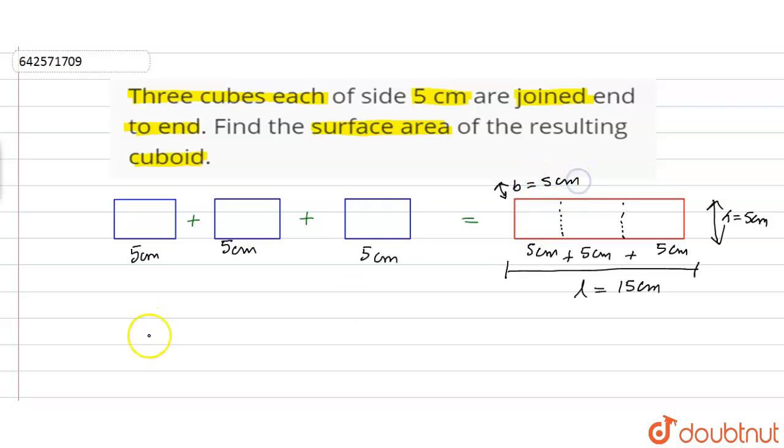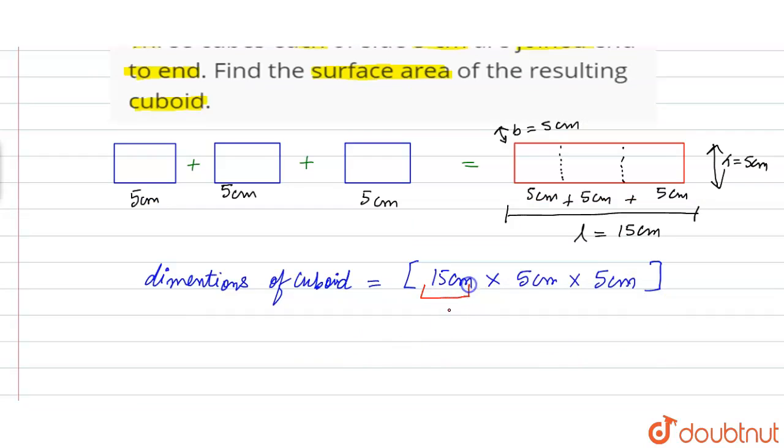Dimensions of cuboid so formed will be length 15 cm, height 5 cm, and breadth 5 cm. These are the new dimensions for the cuboid where 15 is the length, 5 is the height and 5 is the breadth.